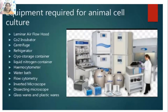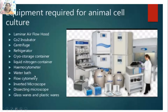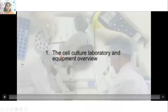This is an overall summary of equipment required for an animal cell culture laboratory: laminar airflow, carbon dioxide incubator, centrifuge, refrigerator, cryo storage container, liquid nitrogen container, hemocytometer, water bath, flow cytometry, inverted microscope, dissecting microscope, glassware, and plastic ware. A recommended video — 'Cell Culture Laboratory and Equipment Overview' — is also available on YouTube.